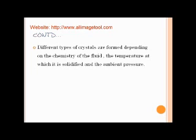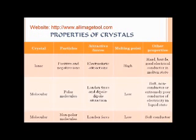In nature there are many types of crystals. The type of crystal which can be formed depends on the chemistry of the fluid or the solvent in which the solute is dissolved, the temperature at which it is solidified, and the ambient pressure maintained. There are mainly two types of crystals: ionic crystals and molecular crystals. Molecular crystals are again divided into crystals with polar molecules and crystals with nonpolar molecules.